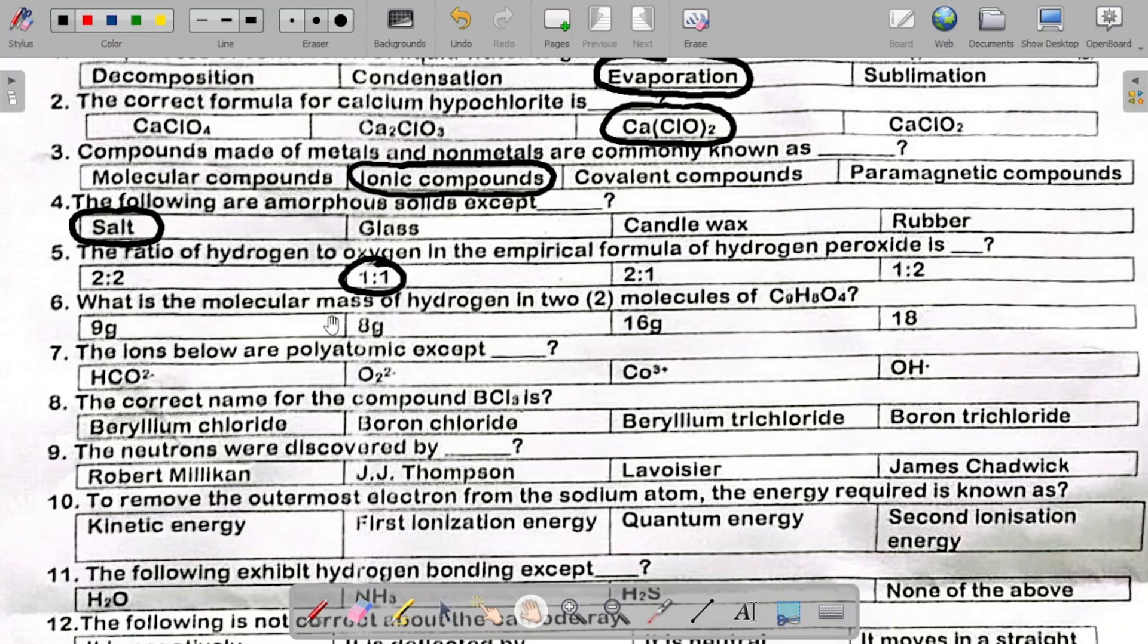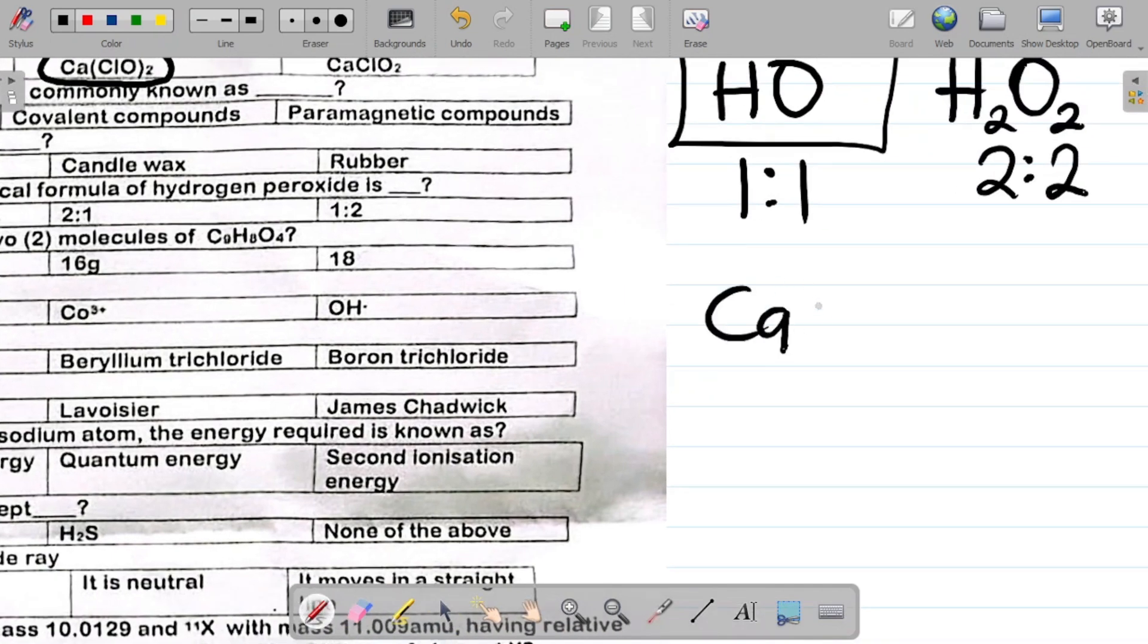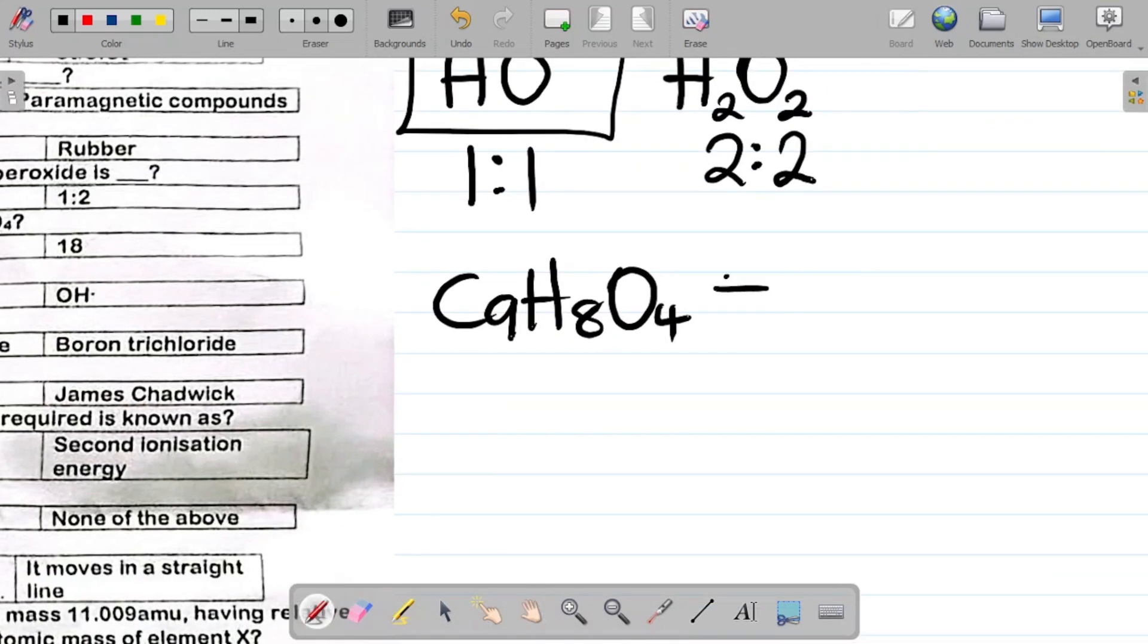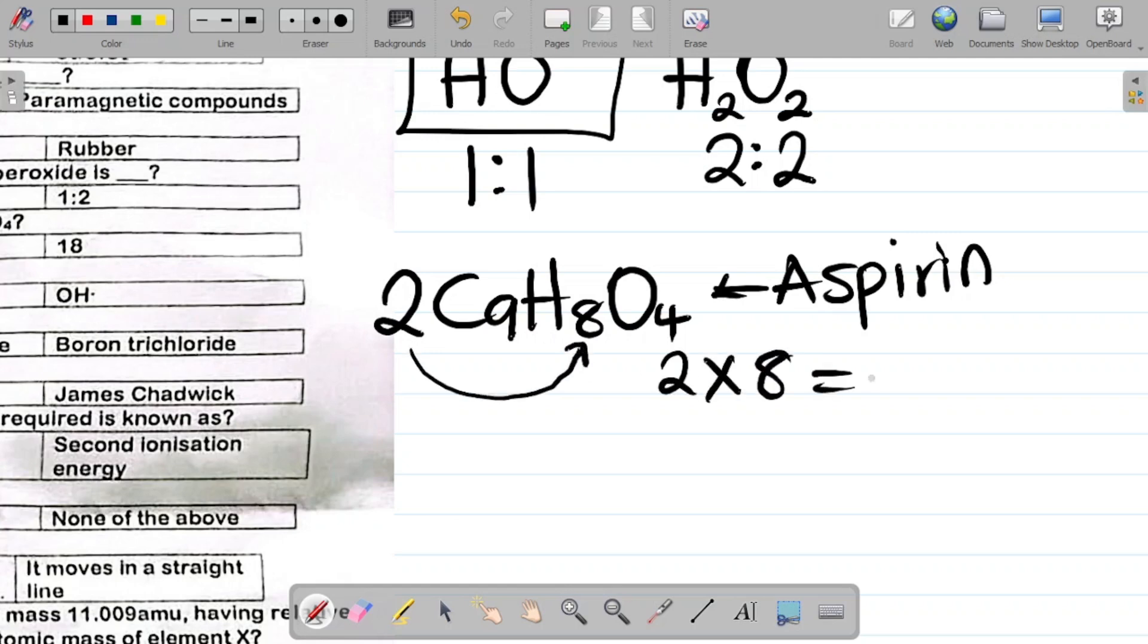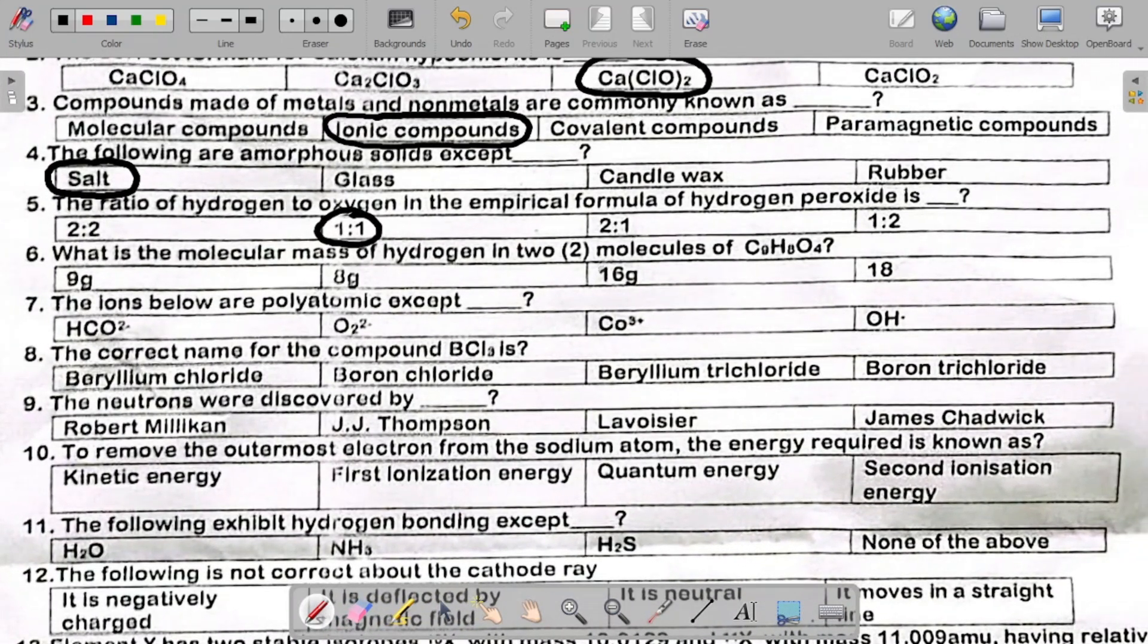Number six, what is the molecular mass of hydrogen in two molecules of C9H8O4? This compound is called aspirin. You are asked the molecular mass of hydrogen in two moles of this. That means I'll add two to the beginning. For hydrogen, it becomes two times the subscript here, which is two times eight, and that's equal to 16. So the answer there is 16, 16 grams.